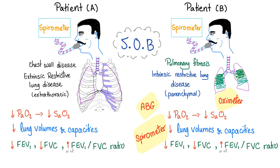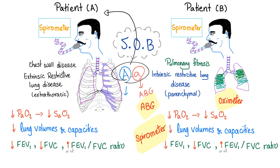The solution is the AA gradient — big A minus small a. We call this the AA gradient. We get the small a from the ABG. We get the big A from the alveolar gas equation. Once you calculate the AA gradient, you can easily distinguish between extrinsic and intrinsic restrictive lung disease.